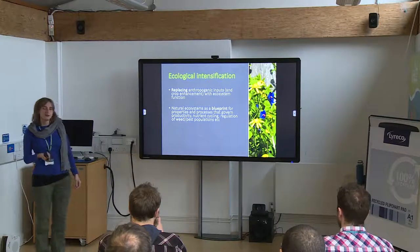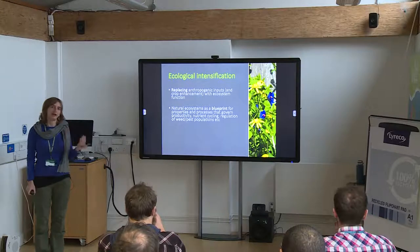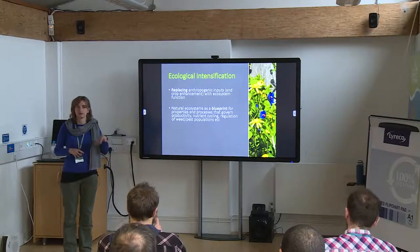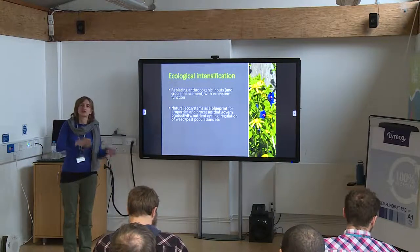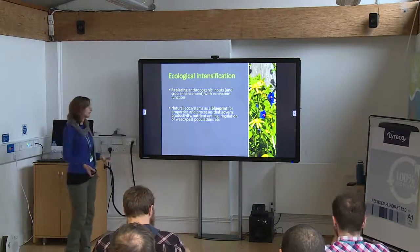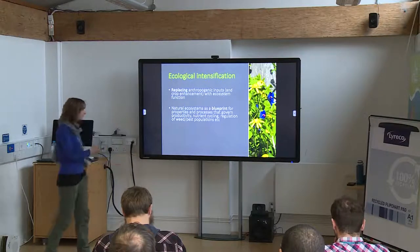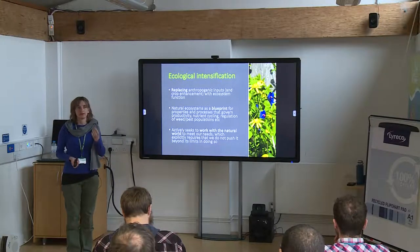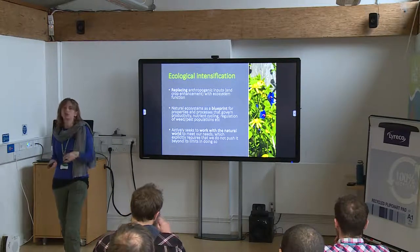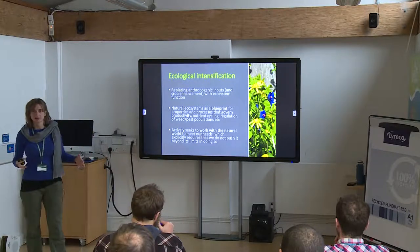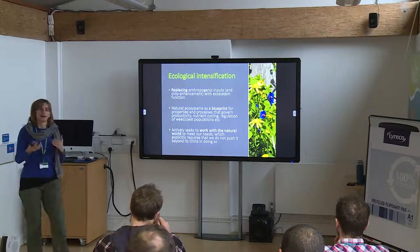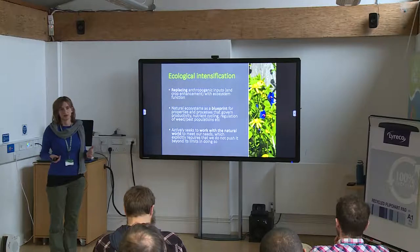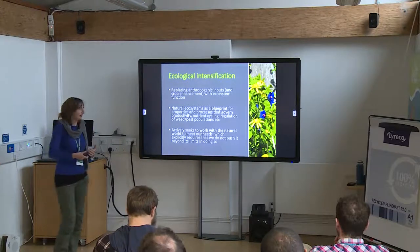To do this, we can use natural ecosystems as a blueprint — looking at how forest systems operate and how populations of different species change or don't change in response to different conditions and processes, and then think about whether we can apply that to the way we farm. The other advantage of this approach is that if you're working with the natural world to produce your food, you can't push the natural world beyond its limits, otherwise it stops working for you. So it reduces the chances of strong environmental impacts because that would be counterproductive to farming.